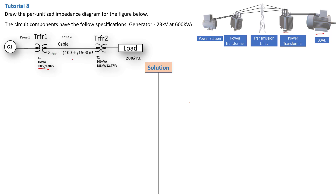Then we have a transmission line made of an impedance with a resistive and inductive element of 100 ohm plus J1500 ohm. At the end of the transmission line there is another transformer, and this is a step-down transformer stepping down the 138 kilovolt to 12.47 kilovolt — a low voltage suitable for small distribution transformers. And we have our load, which is not specified but is a resistive load at 200 kilovolt ampere.